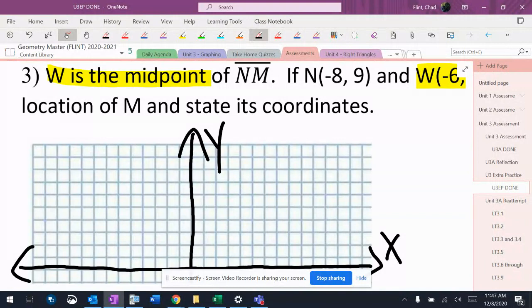So plotting the coordinates: 1, 2, 3, 4, 5, 6, 7, 8... 1, 2, 3, 4, 5, 6, 7, 8, 9... and 1, 2, 3, 4, 5, 6... 1, 2, 3, 4, 5. That's N, that's W.